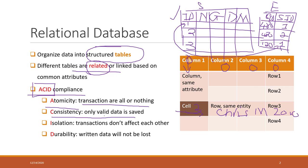Consistency means only valid data is saved. For example, for the date-of-birth field, you can define that it must be a date format — so if you type a string, it will not be accepted. Isolation means transactions do not affect each other — if multiple users are reading data or a single user is modifying data multiple times, each transaction will not affect the others. And Durability means the data is saved on hard disk, not in memory, so when the data is there, it will persist.